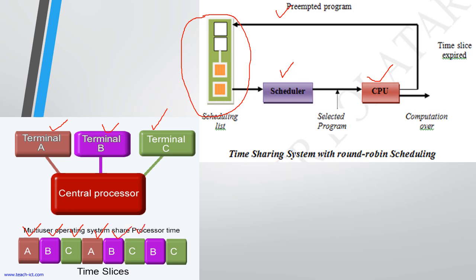You can see that A is not executing again. The reason is that the execution of process A is completed, so the processor need not be allotted for process A again.